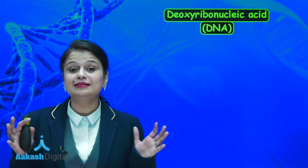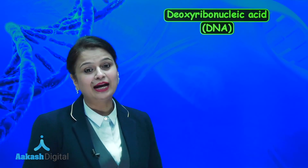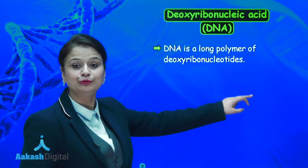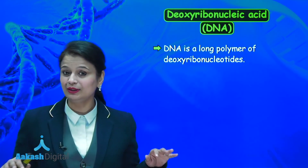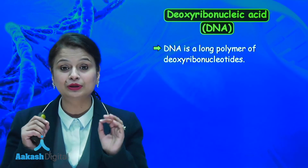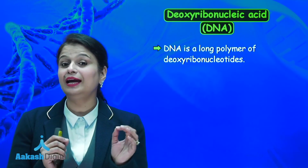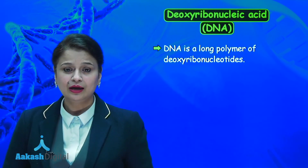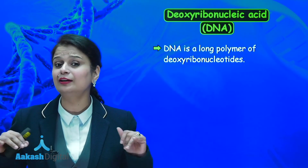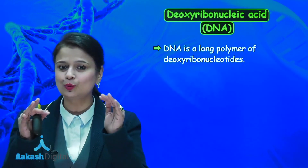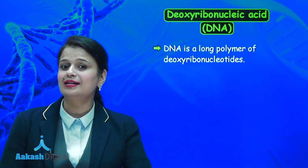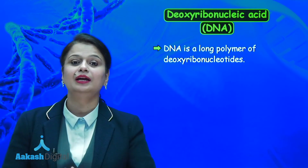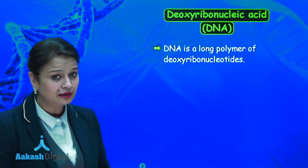DNA is a long polymer, and in this polymer the subunits are formed by deoxyribonucleotides. It is a polymer in which the monomers are nucleotides. Generally, the length of DNA is defined as the number of nucleotides. In DNA there are two strands which are spirally twisted, and both of these strands are made up of nucleotides that pair with each other via their bases.